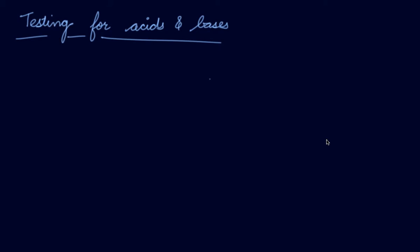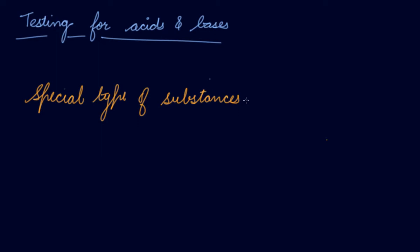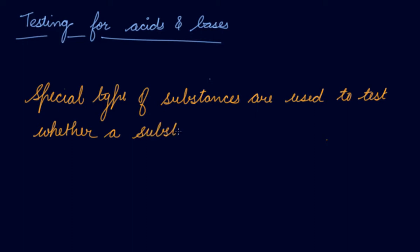So how will we find out whether the substances are acids or bases? Special types of substances are made to test whether a substance is acidic or basic. These substances are known as indicators.